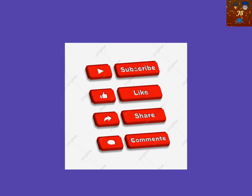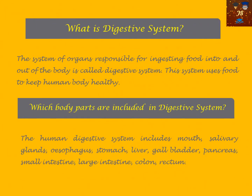So, what is the digestive system? The system of organs responsible for ingesting food into and out of the body is called the digestive system. By this system, we take in food, we digest the food, and we throw out the waste material from the body.